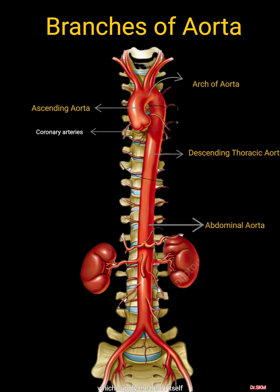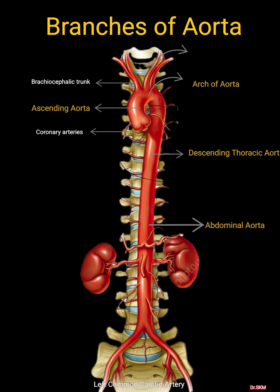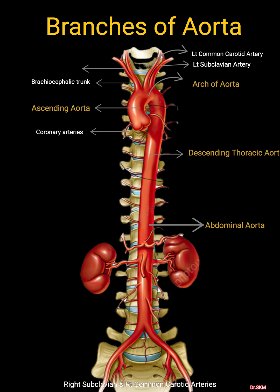The arch of aorta gives three branches: the brachiocephalic trunk, left common carotid artery, and left subclavian artery. The brachiocephalic trunk divides into the right subclavian and right common carotid arteries.